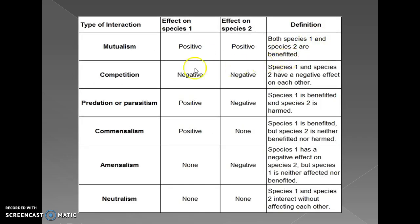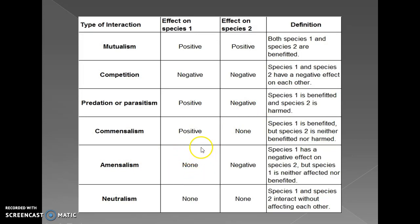In mutualism, both species are benefited — plus-plus. In competition, both species have a negative effect on each other — minus-minus, a type of negative interaction. In predation and parasitism, it is plus-minus: species one is benefited and species two is harmed. In commensalism, species one is benefited but species two is neither benefited nor harmed — it is a type of positive interaction. Amensalism: species one has a negative effect on species two, but species one is neither affected nor benefited.